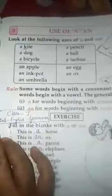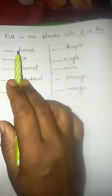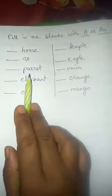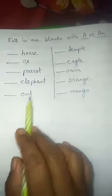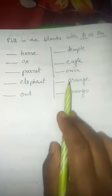So see, fill in the blanks. Here we have horse, ox, parrot, elephant, owl, temple, eagle, onion, orange, mango. For better understanding, you have to write here the words.